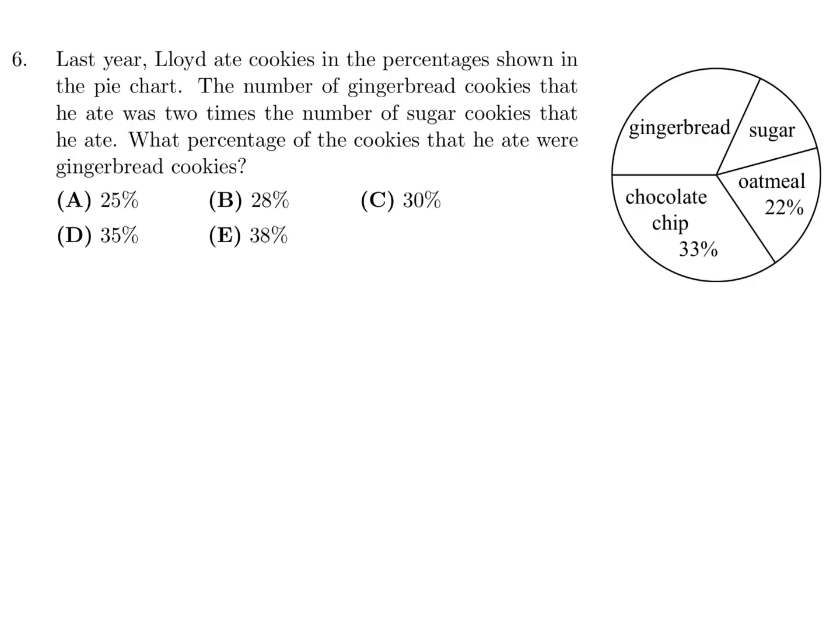Last year, Lloyd ate cookies in the percentage shown in the pie chart. The number of gingerbread cookies that he ate was two times the number of sugar cookies that he ate. What percentage of the cookies that he ate were gingerbread cookies? So gingerbread, we'll call 2x, and x is the sugar. So 2x plus x plus 33% plus 22% would be the total, which is 100%.